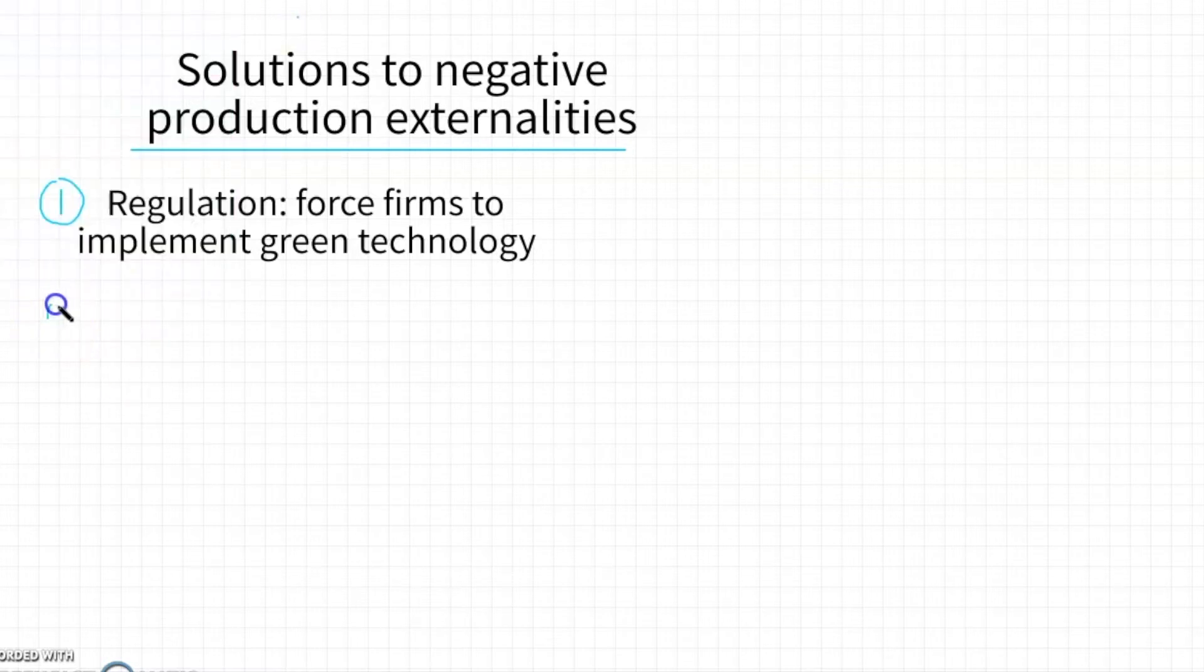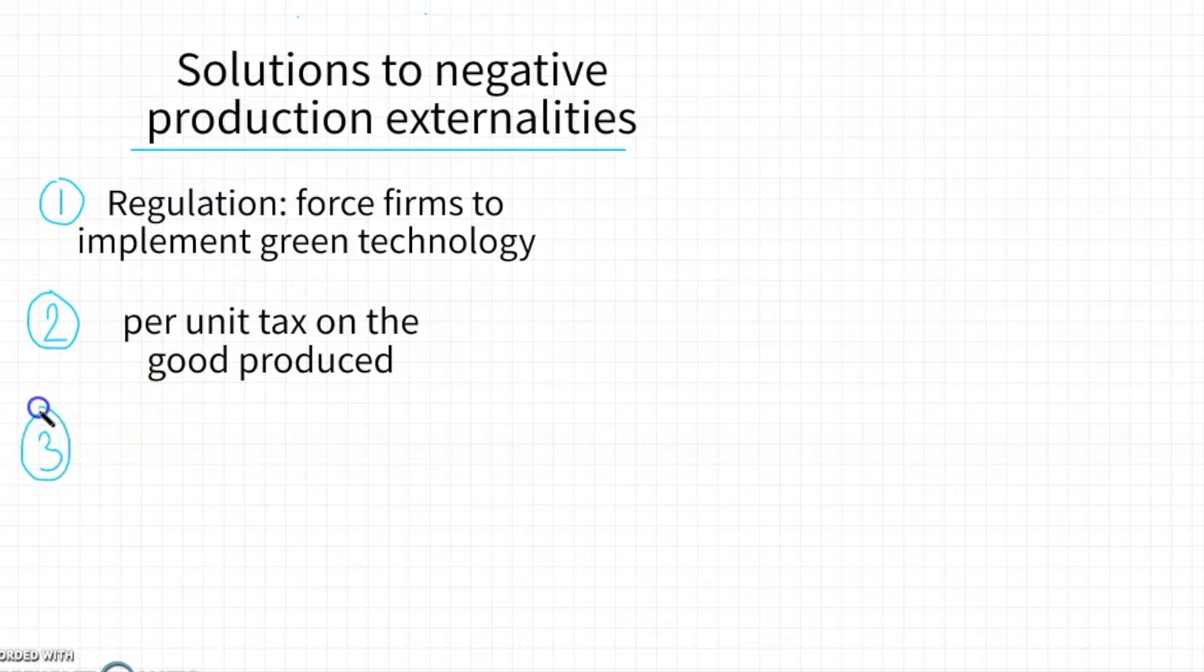A second option is a per unit indirect tax. Again, increasing production costs, bringing up the MPC curve to MSC curve, increases the cost and the price of the product, and so will ideally bring down production. But actually in this case, an indirect tax is less effective than in a consumption externality because when you tax the per unit of the good, the producer has no incentive, no motivation to actually change the methods of their production into greener technologies.